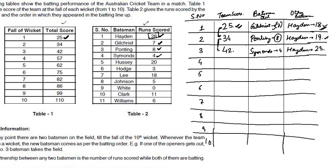The next wicket fell at the score of 57, a difference of 15. The next person to bat is Hussey, who scored 20 runs total. Since the difference here is 15 and Hussey scored 20, Hayden must be the person who got out. Hayden scored 5 more runs to reach his 28. So if Hayden scored 5 runs, the other 10 runs were scored by Hussey.